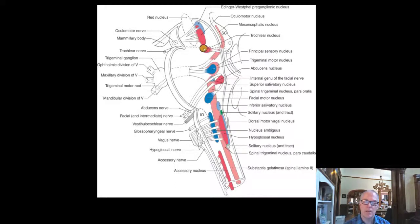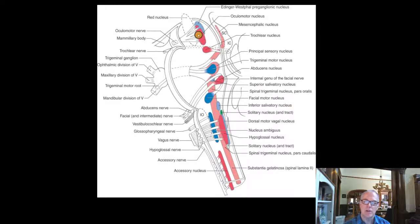When we come up into the midbrain, we have cranial nerve four here, which has an unusual course — it exits the dorsum of the midbrain and then exits on the ventral surface. Then we have the third nerve. The oculomotor nucleus supplies all the extraocular eye muscles, and the Edinger-Westphal nucleus is the parasympathetic contribution for the third nerve.